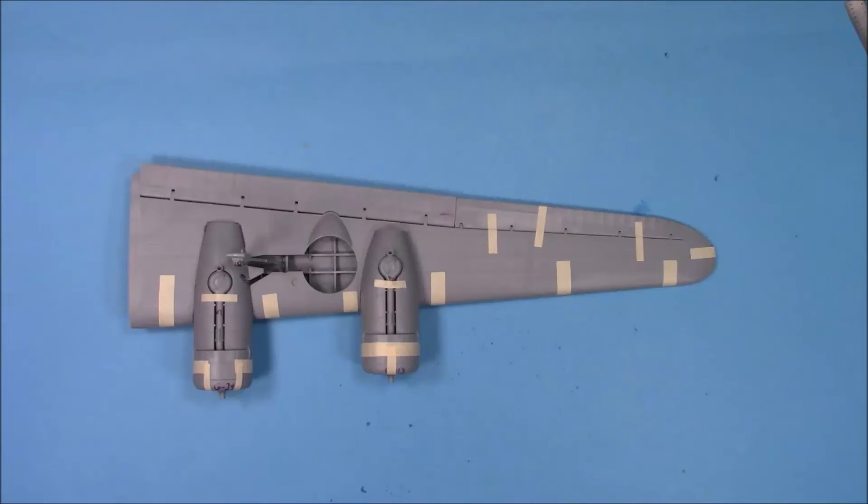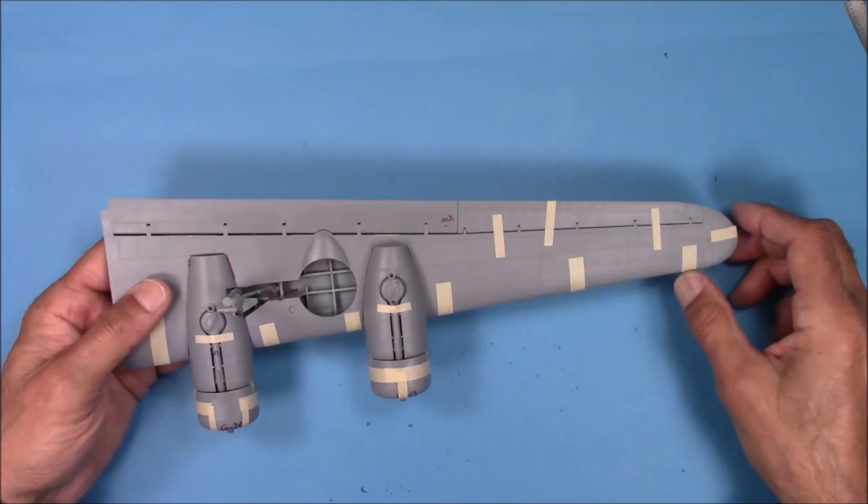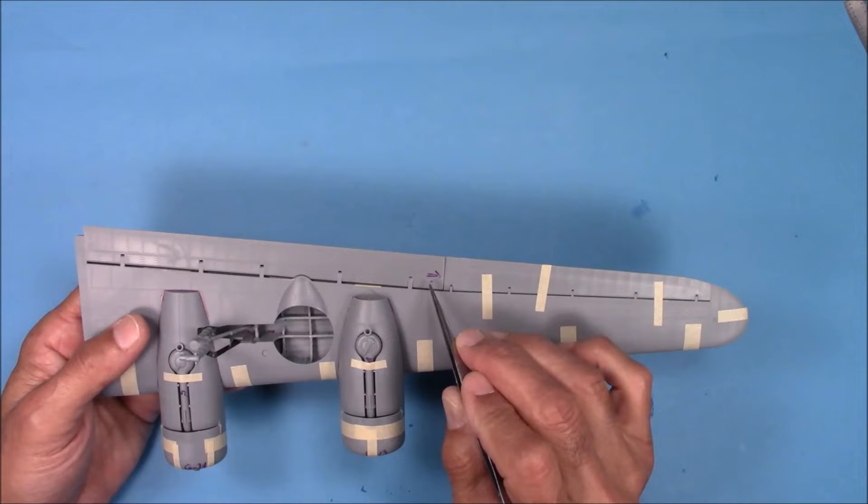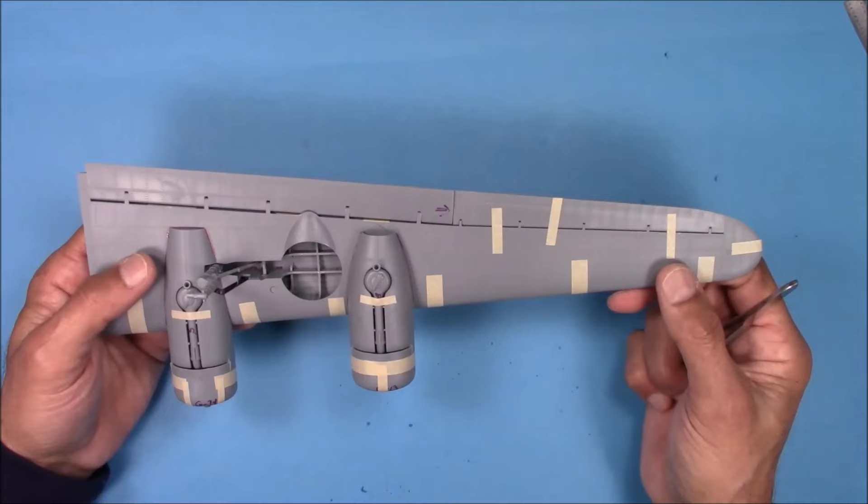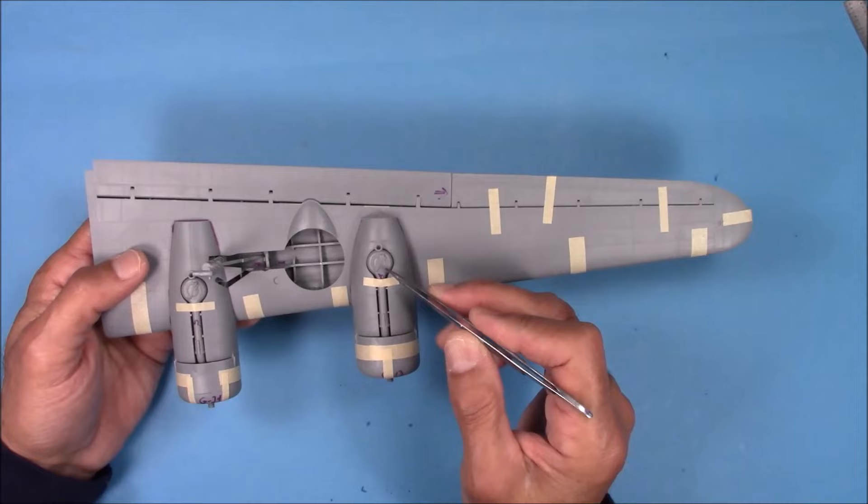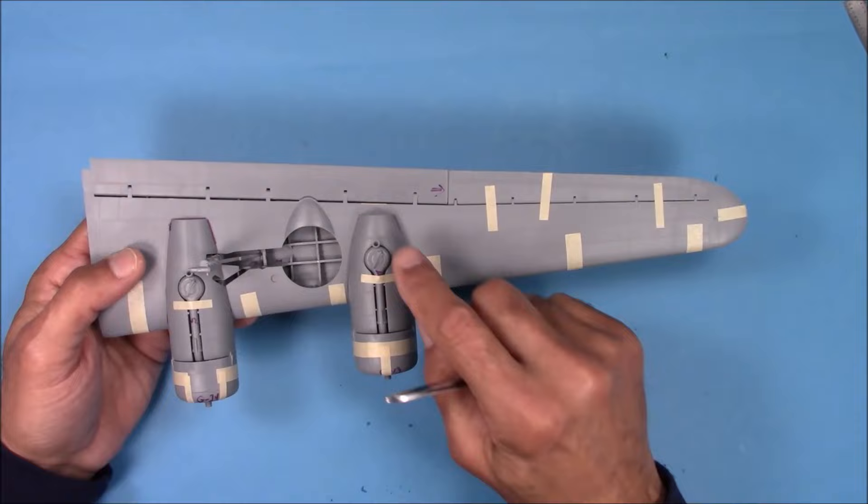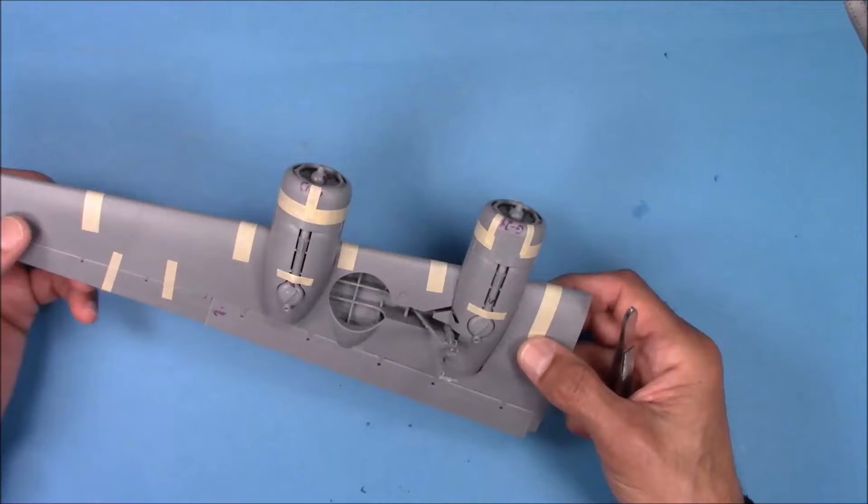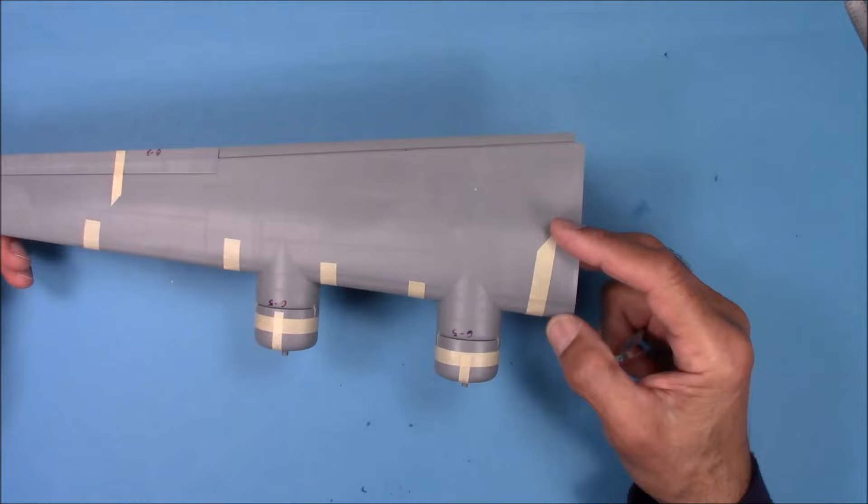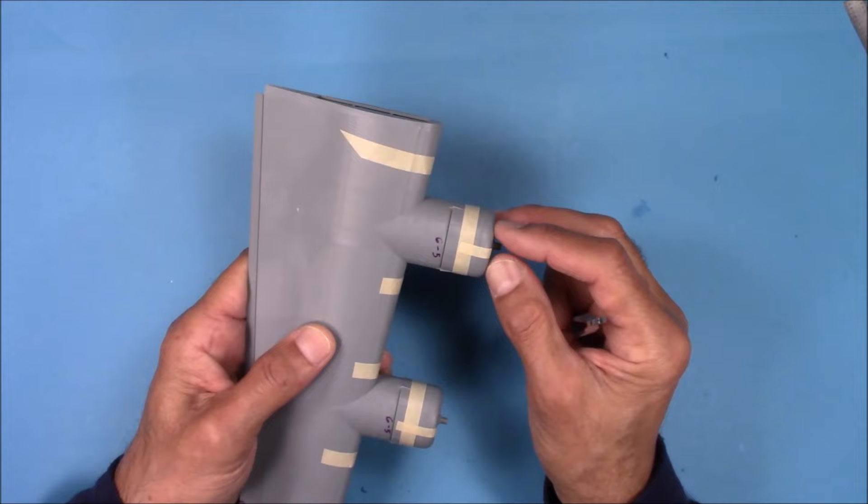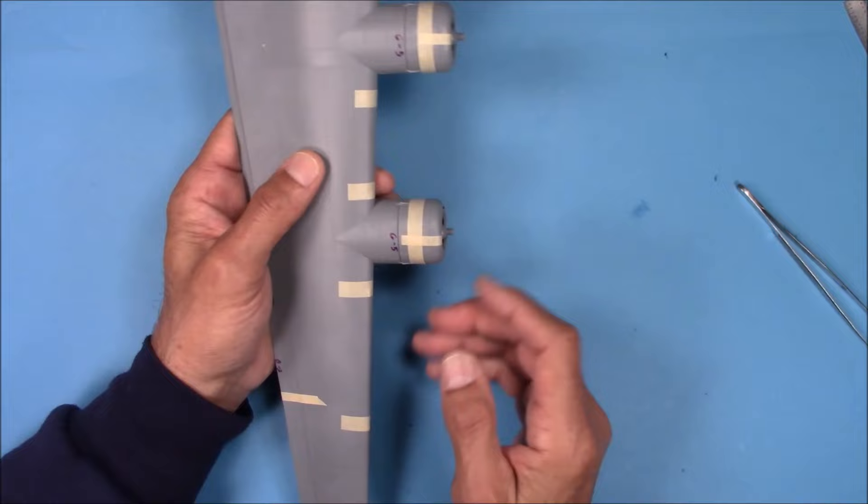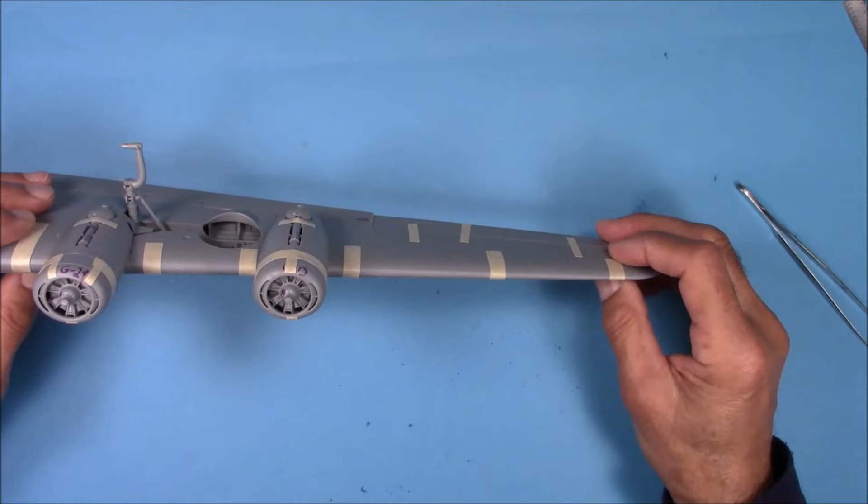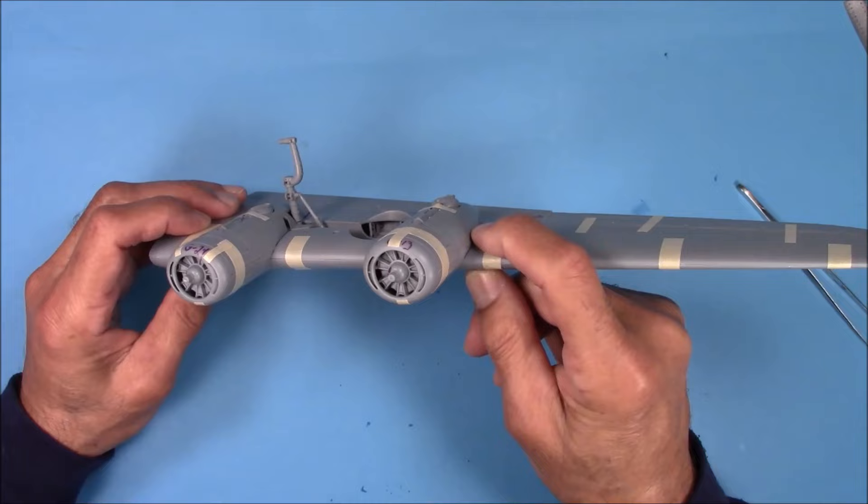I've got both wings taped up including the flaps and control surfaces, and everything fits together pretty good. The only thing you're going to have to watch out for is the flaps - you've got to sand a little bit off on this side to get it to fit correctly. The seam line along the leading edge is really tight. You're still going to have to run a bead of super glue along here, but there's no appreciable voids.